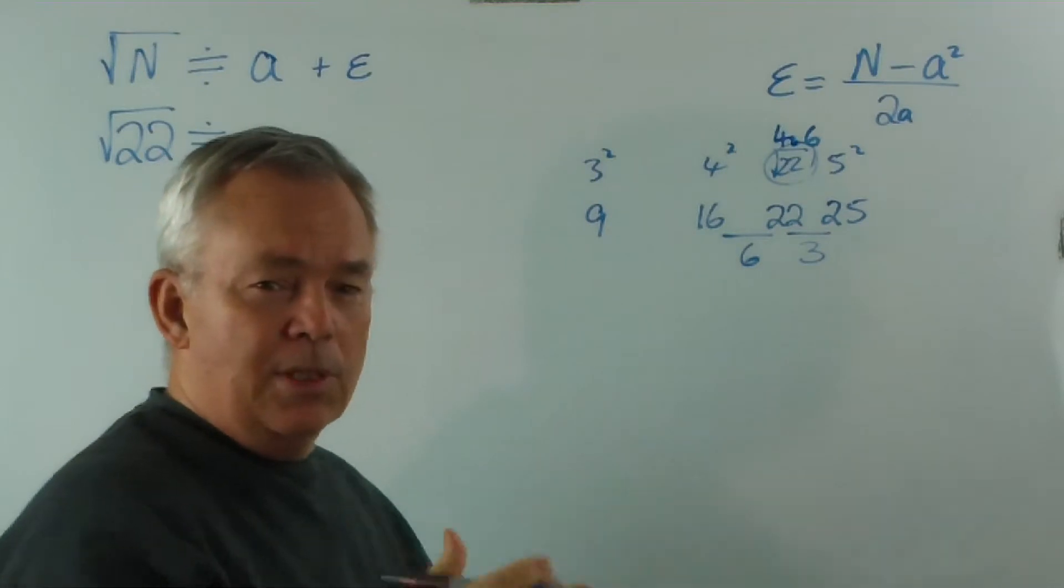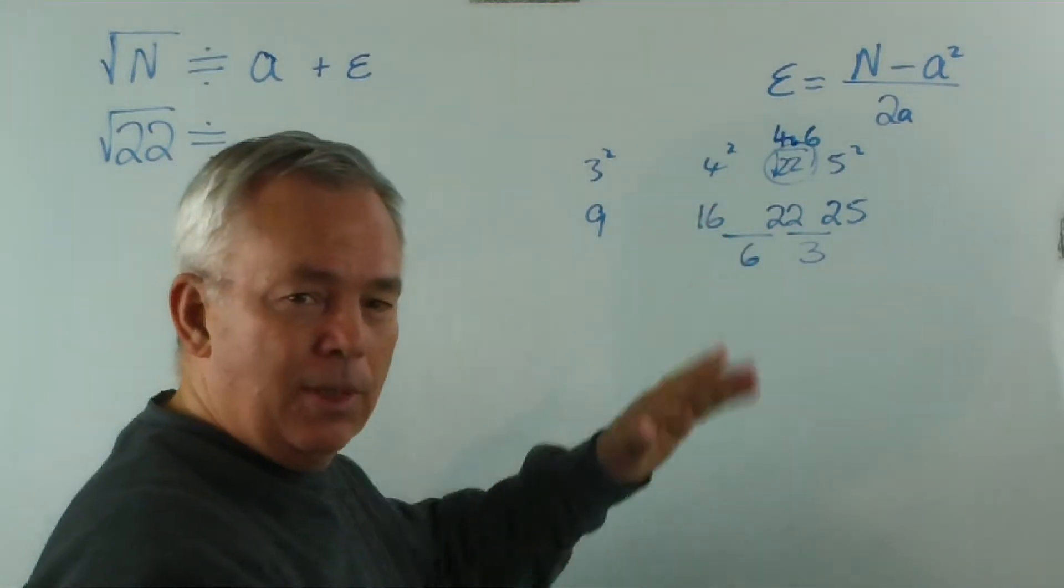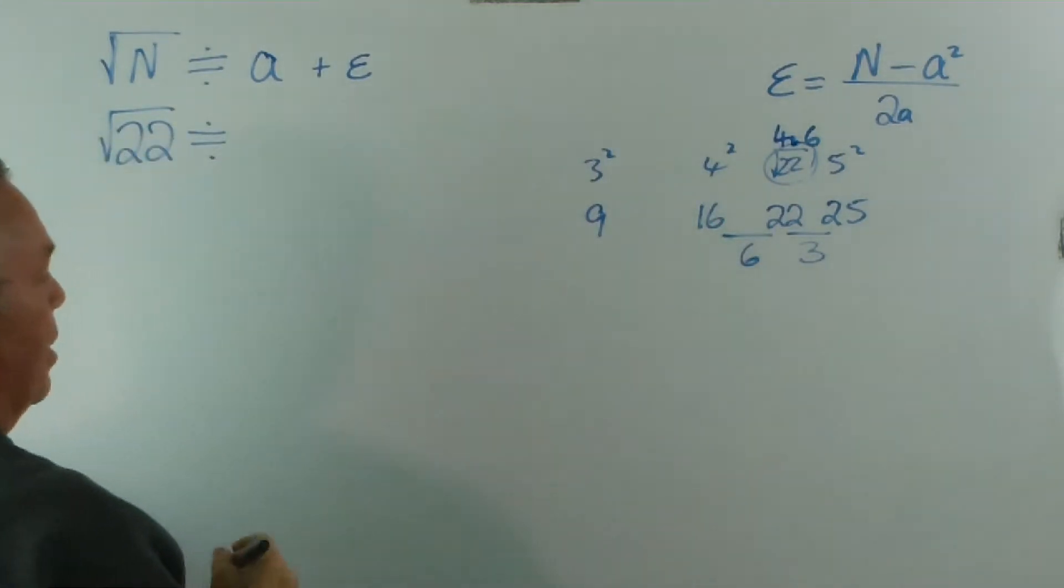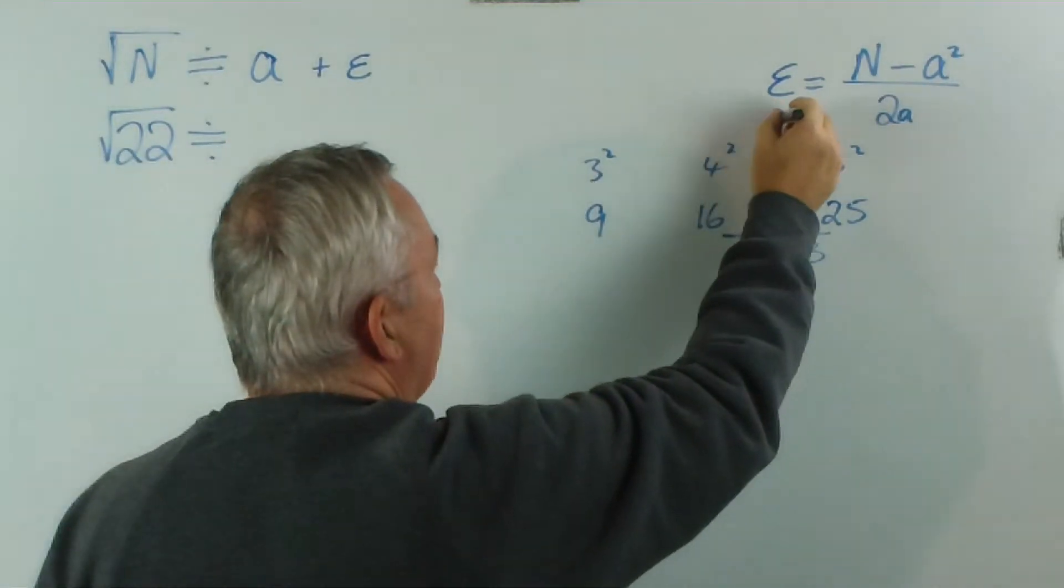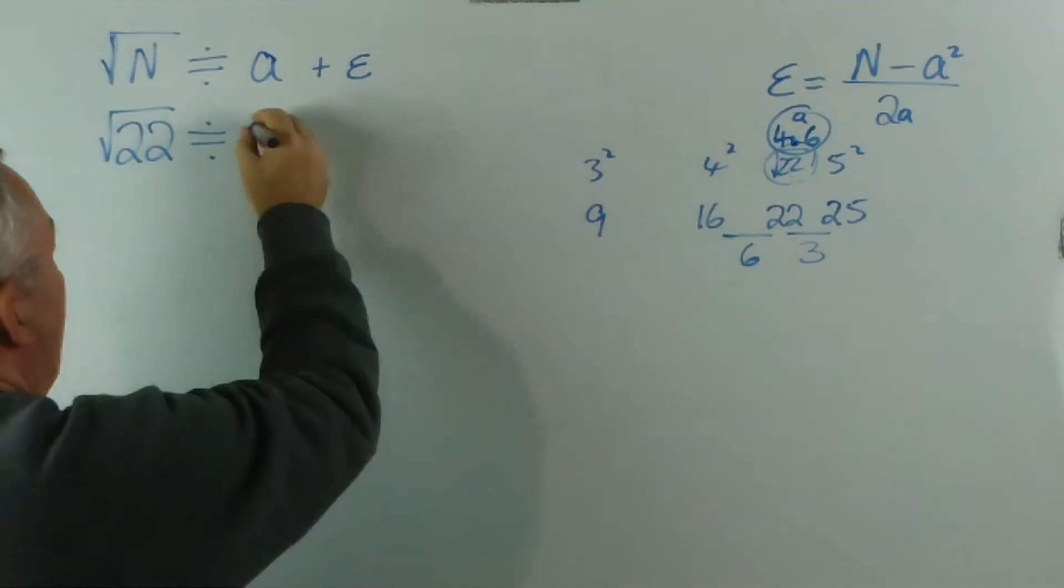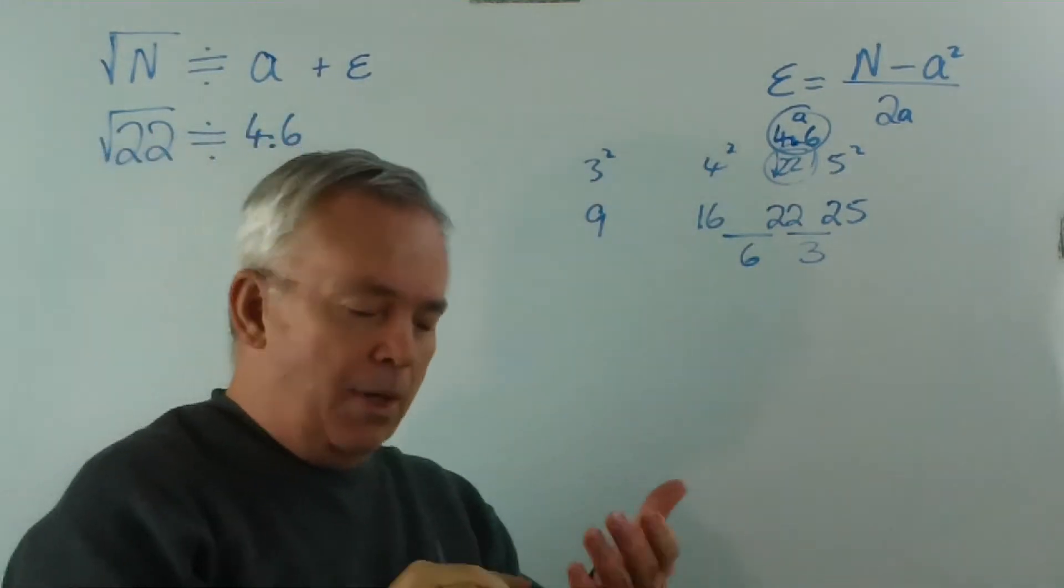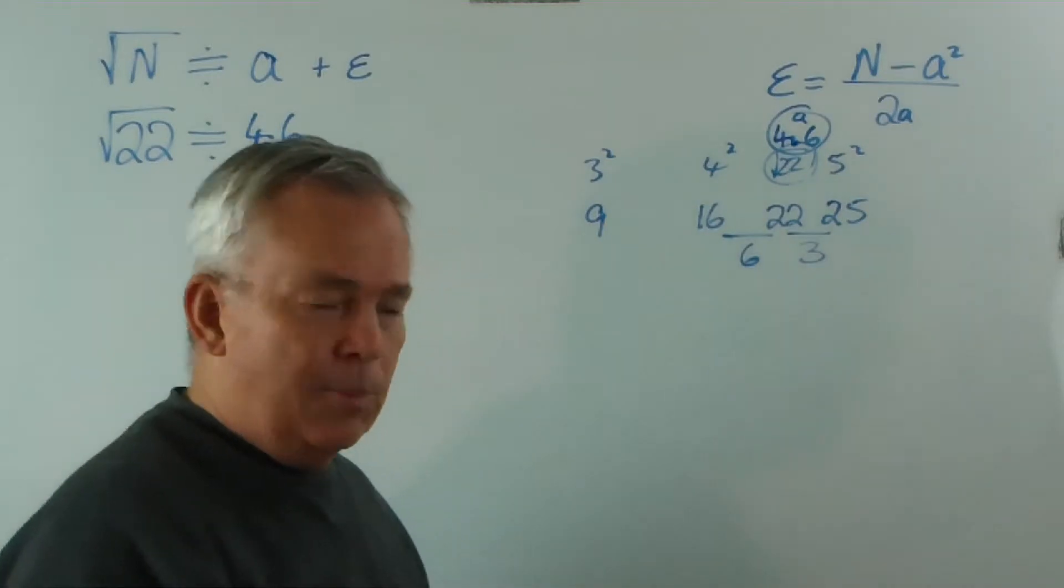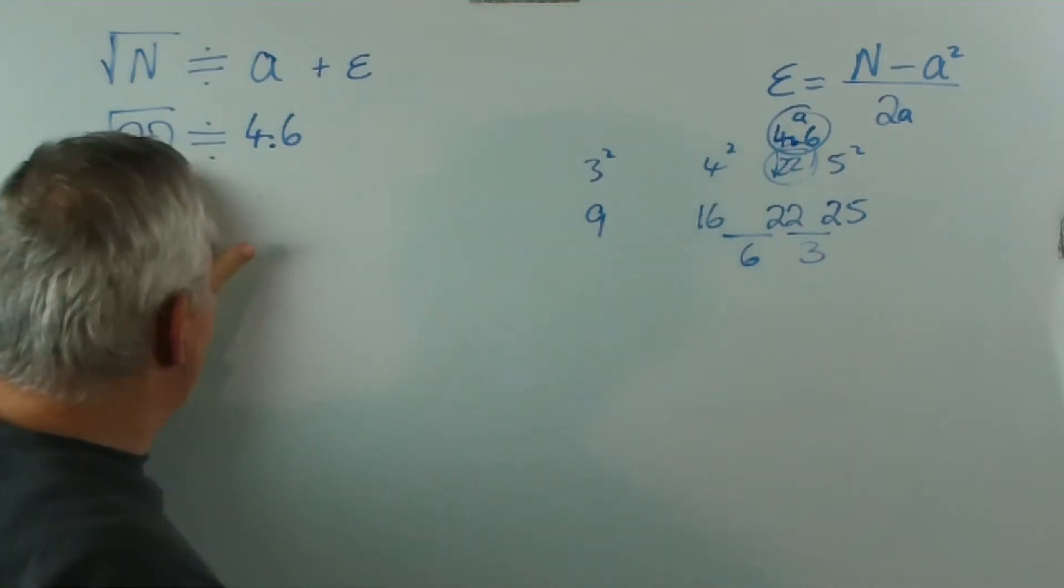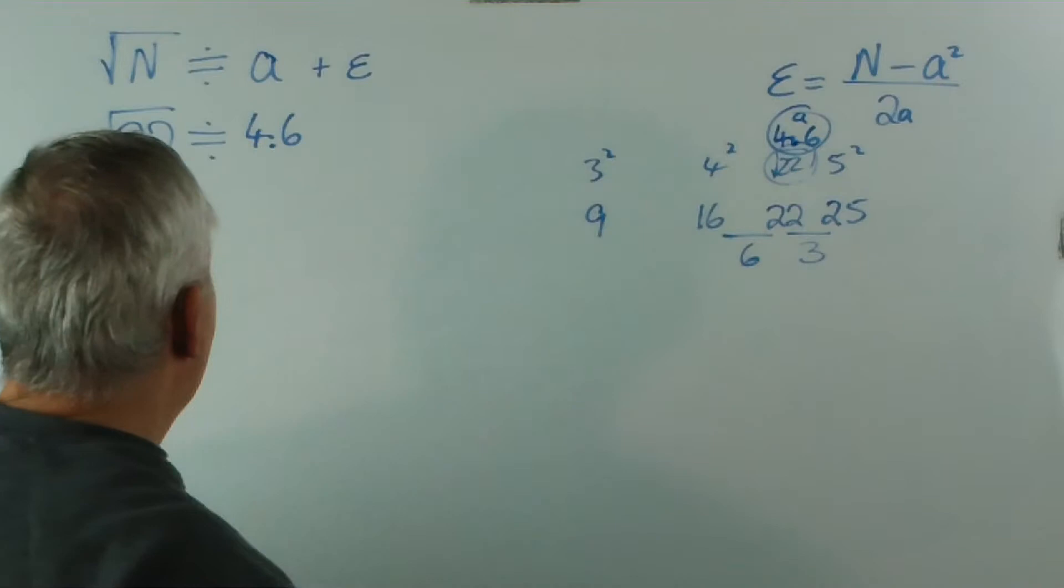It could be a bit closer to 4.6 than 4.7, but probably a little bit better to err on the low side when you're making this guess. So we're going to say that a, this is our value of a, is about 4.6. At this stage you can get your calculators out and multiply 4.6 by 4.6 and see how close we've got. It should be up there somewhere, but it won't be exactly 22.